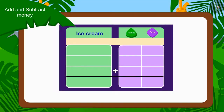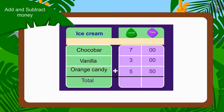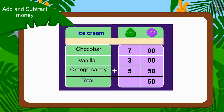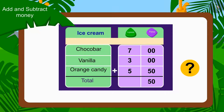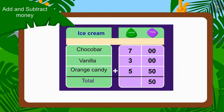To know the total amount, we have to add the prices of all three ice creams. We will first write the price of all three ice creams in rupees and paise. Now we will add the amount of paise first. Can you tell the total amount of paise? Right, 50 paise.